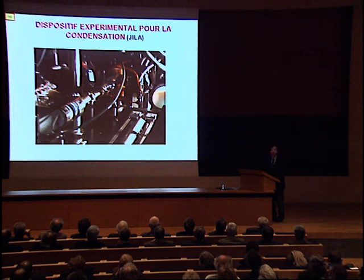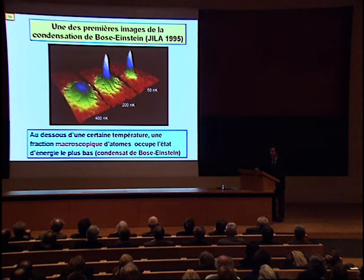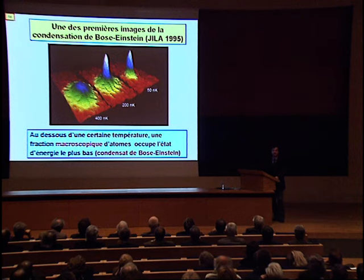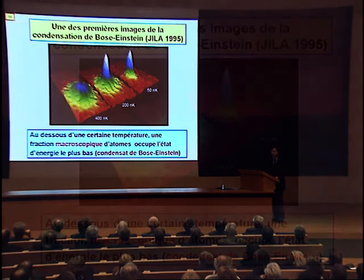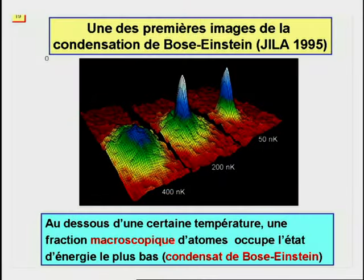Finalement, en 1995, en utilisant les nouvelles techniques de piégeage et de refroidissement, les expérimentateurs ont produit le premier condensat de Bose-Einstein. Cette image est une des premières images de la condensation obtenue au laboratoire JILA à Boulder, en Colorado, dans un gaz d'atomes de rubidium. La condensation fut, dans la même année, réalisée aussi au MIT, sur le sodium.